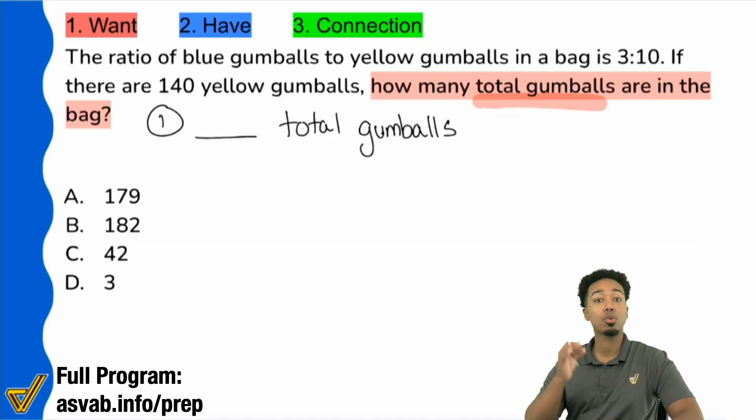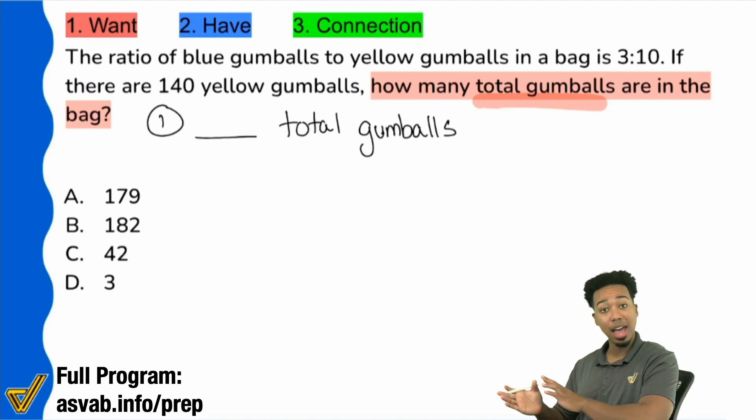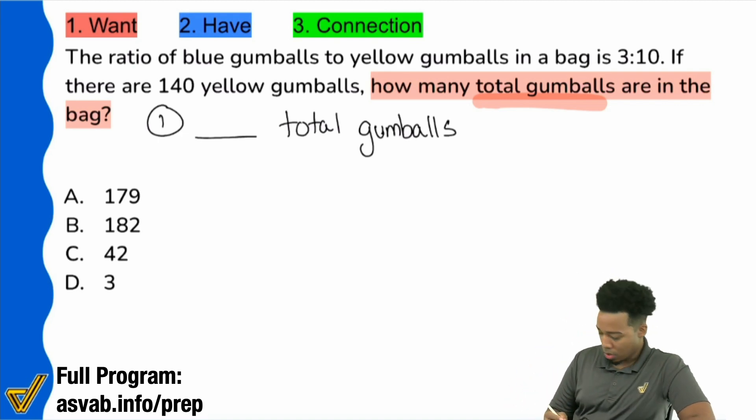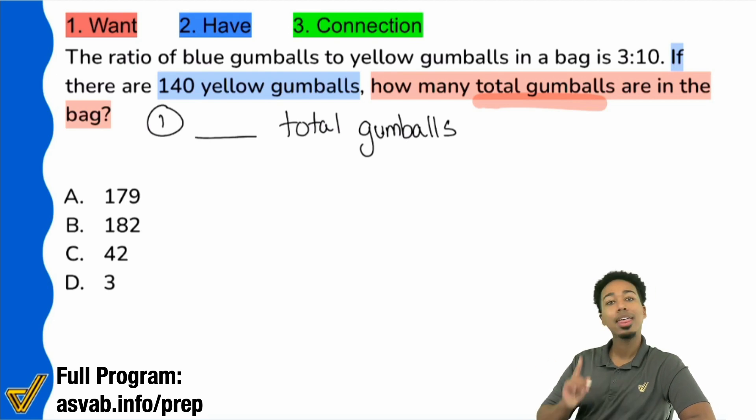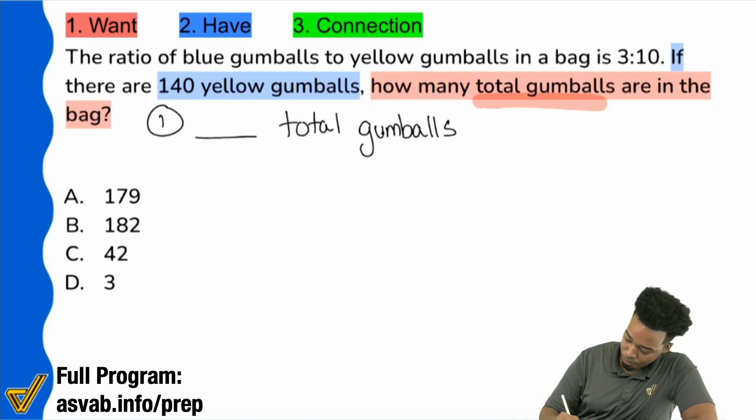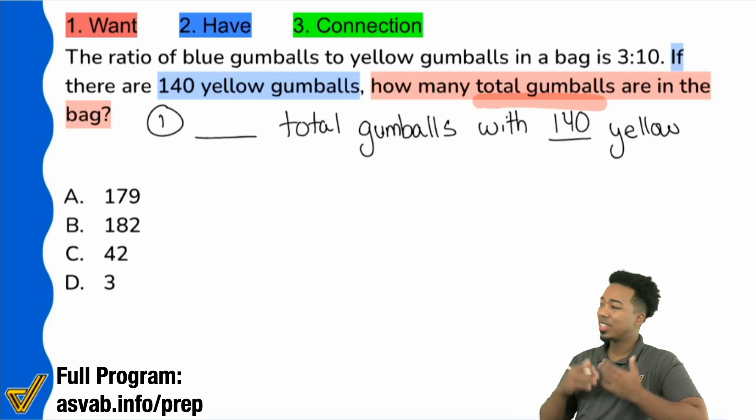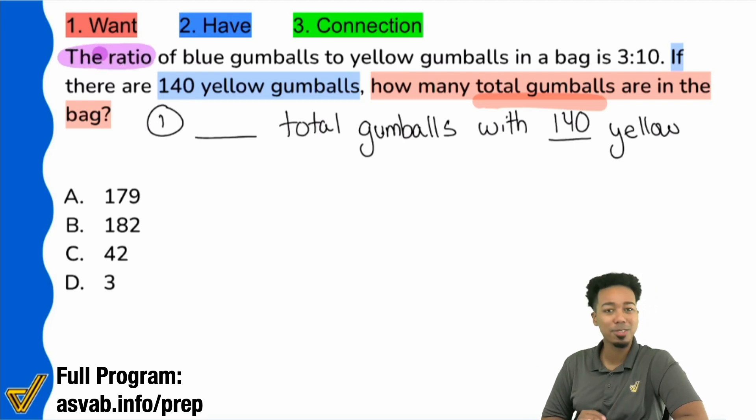Let's ace the ASVAB. And as always, remember whenever you have a word problem that has the word if in it, in the actual question sentence, then that relationship needs to be established because they're connecting the information for you. Right over here, my party people, it says, if there are 140 yellow gumballs, how many total gumballs? That's how you know that there's a connection between the total and yellow. So there are blank total gumballs with 140 yellow gumballs. Now, the reason that you know that this is going to be a proportion word problem instantaneously is because they give you some hints here. It says the ratio right there at the beginning of the problem. So we know that this is going to be some sort of fraction problem or proportion problem.